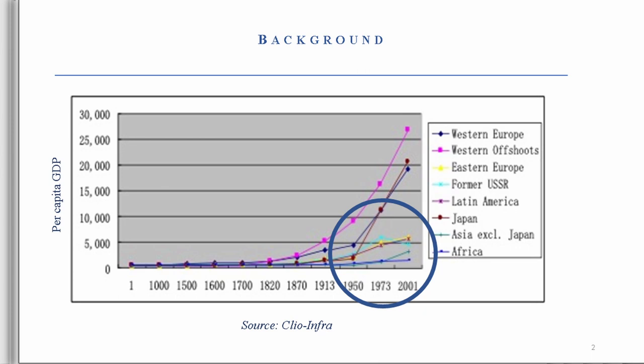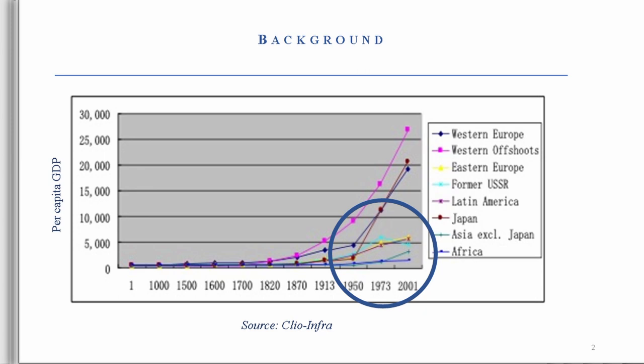Industrialization — when we first started, the world's per capita income of global economies was almost zero. The first phase of industrialization started in about the 17th century with the new Western offshoots, and then later on, Western Europe and many other regions of the world started to industrialize their economies. However, we see a lot of industrialization that happened in 1950, following World War II. Yet the trend of industrialization in Africa remained stagnant.